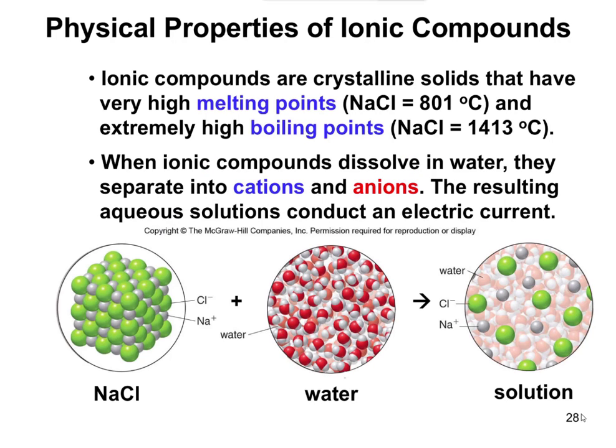Ionic compounds have unique physical properties: they're solids with very high melting and boiling points. To melt sodium chloride you'd have to heat it to 801 degrees Celsius, and to boil it you'd need 1413 degrees Celsius. That's not really a concern for us in this class — just know that ionic compounds are solids with high melting and boiling points.